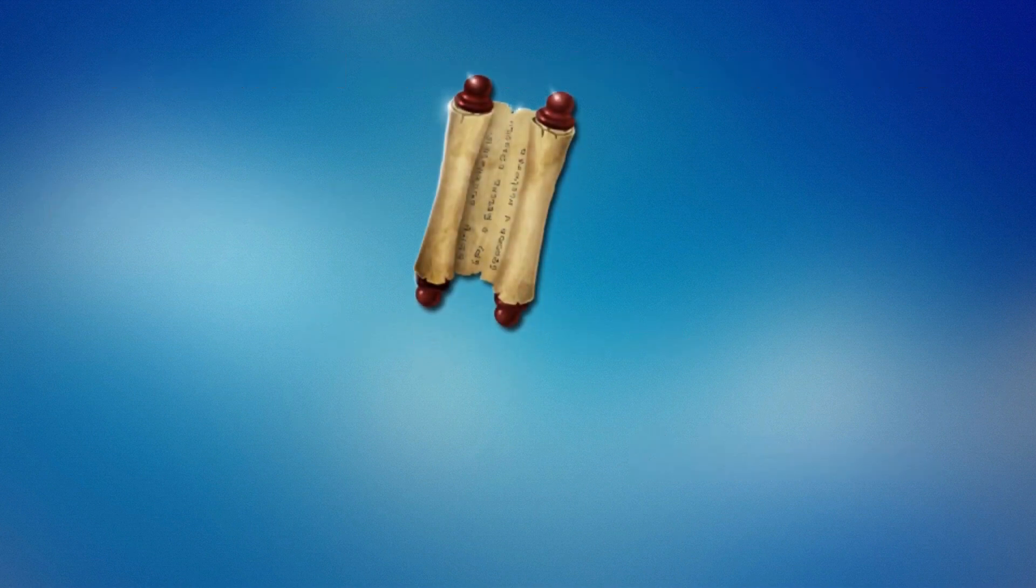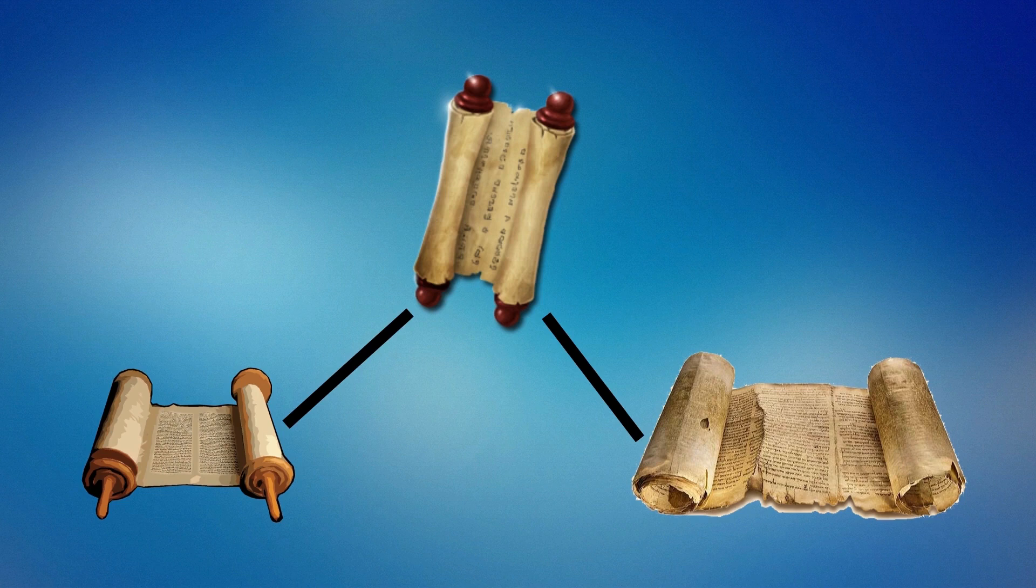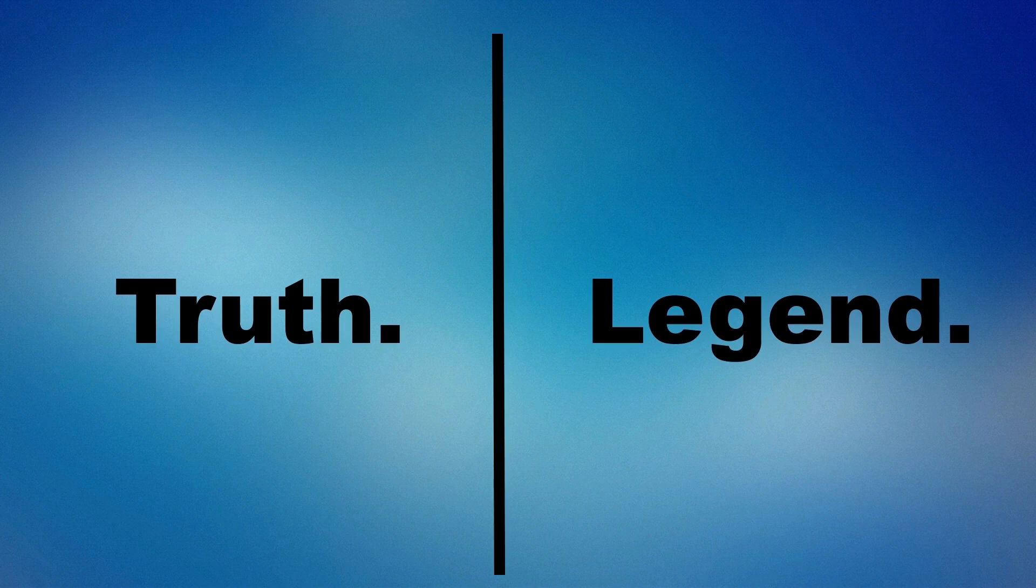Presented with a written account of an event, we can compare it to other accounts of the same or older events, and this made it possible for the ancient Greeks to later formulate a criteria for truth, and thereby creating a distinction between truth and legend.